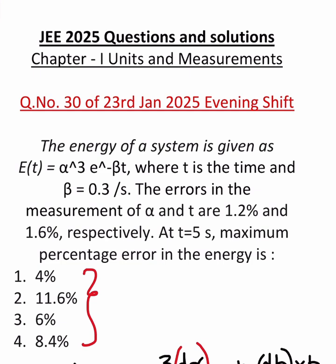Okay now let us see what they have given. They have given this equation that is E(t) equals alpha cube into e to the power of minus beta t.